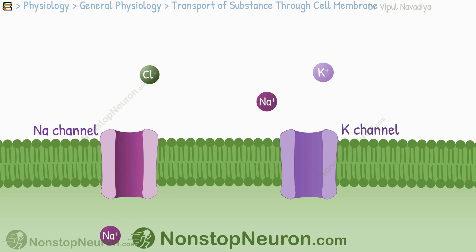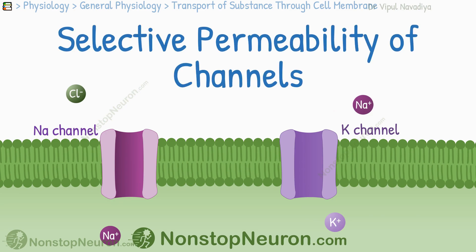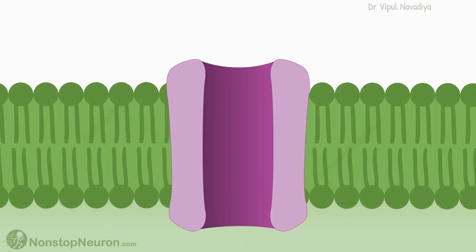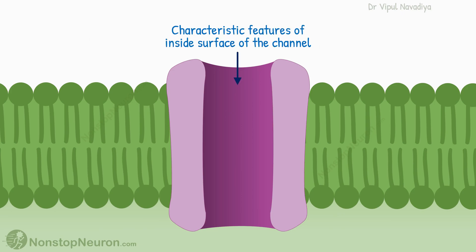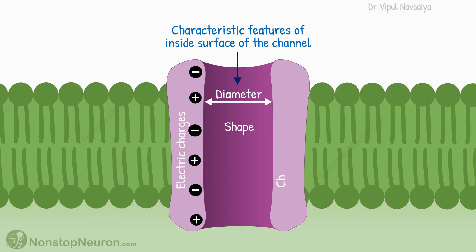Why is the sodium channel permeable to sodium but not chloride? And why is the potassium channel permeable to potassium but not sodium? In this video, we will discuss the selective permeability of protein channels. A brief answer is that ion selectivity results from characteristic features of the inside surface of the channel that makes the pore — specifically the diameter and shape of the pore, and electrical charges and chemical bonds along the inside surface. These characteristics determine which ion can pass through and which cannot.